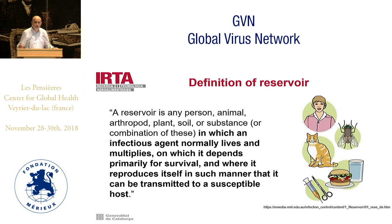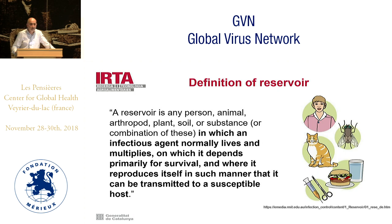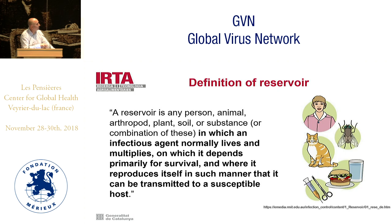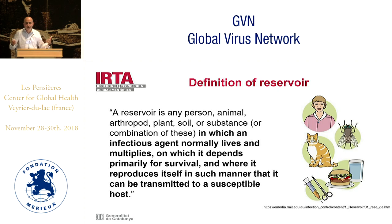First of all, it is interesting to define what a reservoir is. A classical definition considers the reservoir to be any person, animal, arthropod, plant, soil, or substance — or even a combination of those — in which the infectious agent normally lives and multiplies, and from which it can be transmitted to the susceptible host. This is probably what we have in mind in most cases, but from an epidemiological point of view the situation is relatively more complex.